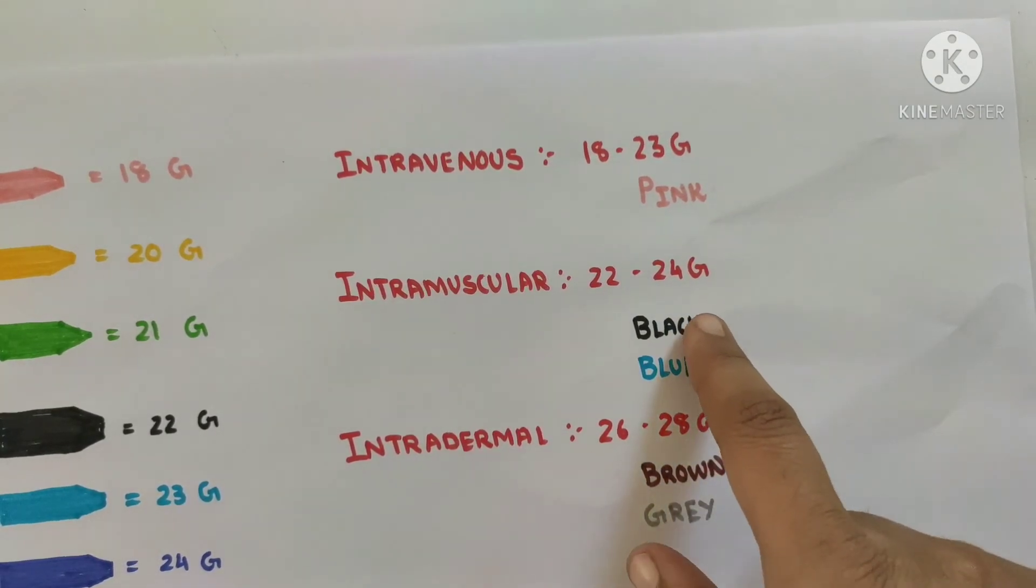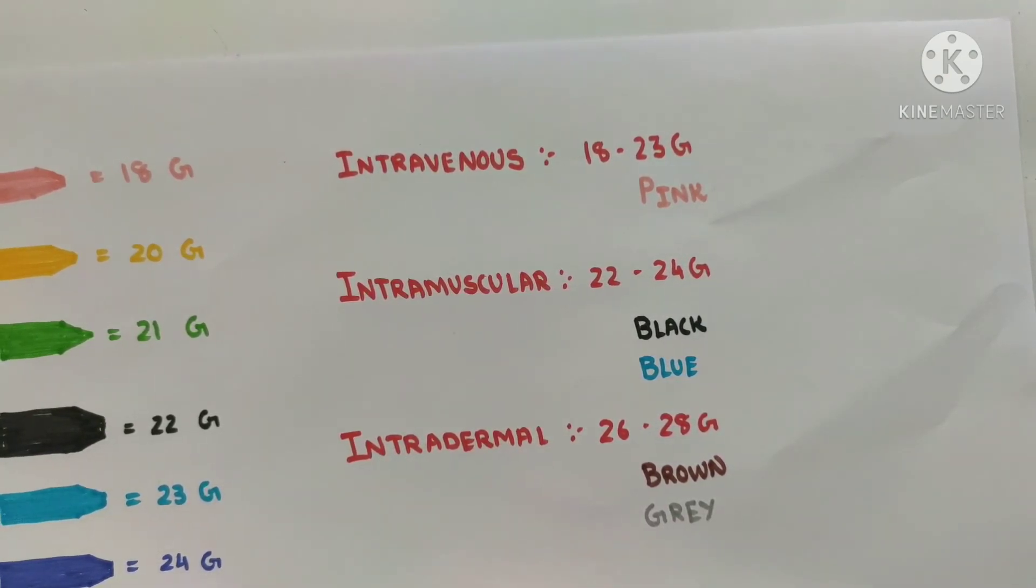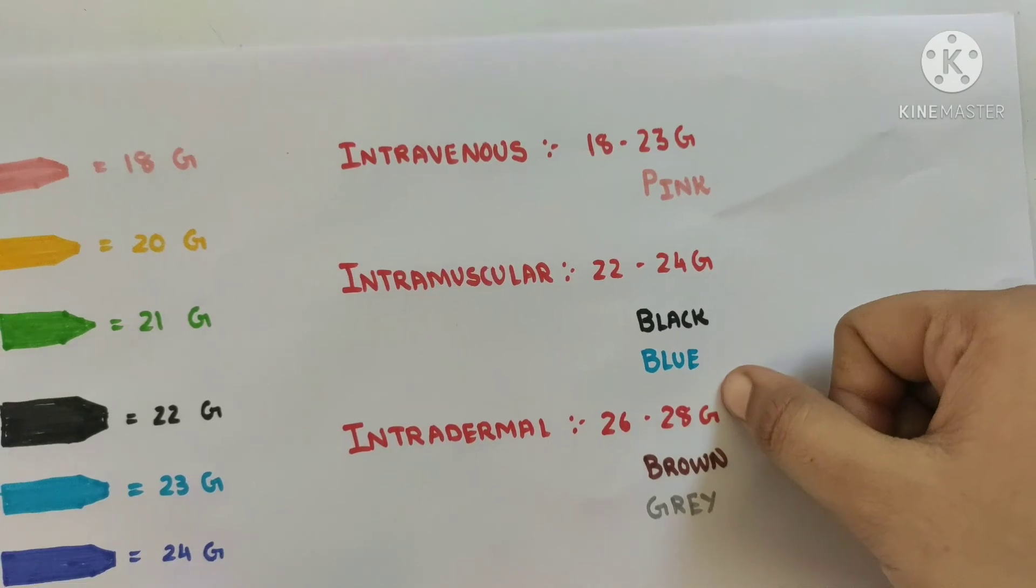Now through intradermal route we can just give around 1 to 2 ml maximum, hence diameter will be smallest and gauge will be the highest. It is around 26 to 28 gauge, so we will use the needle with brown or gray hub.